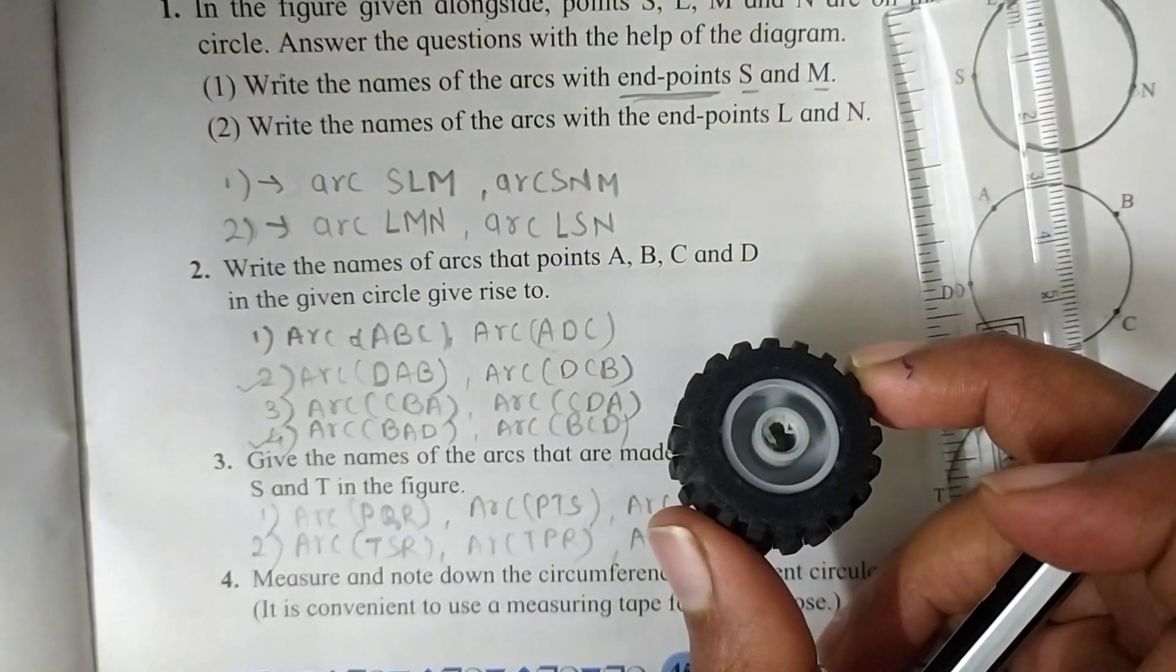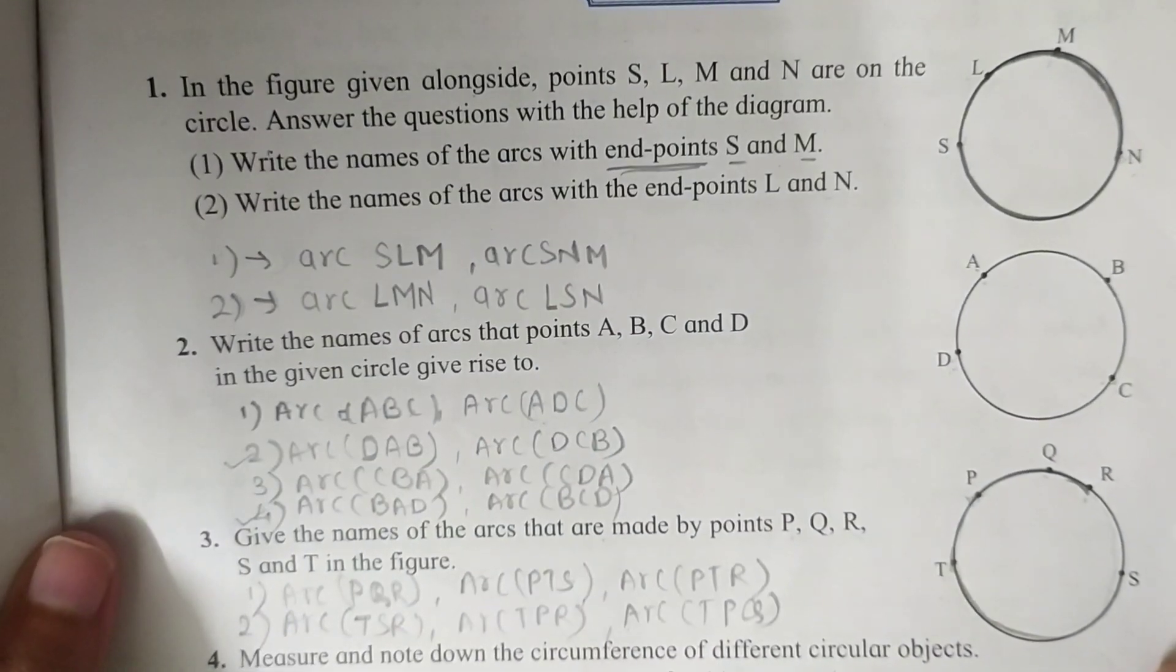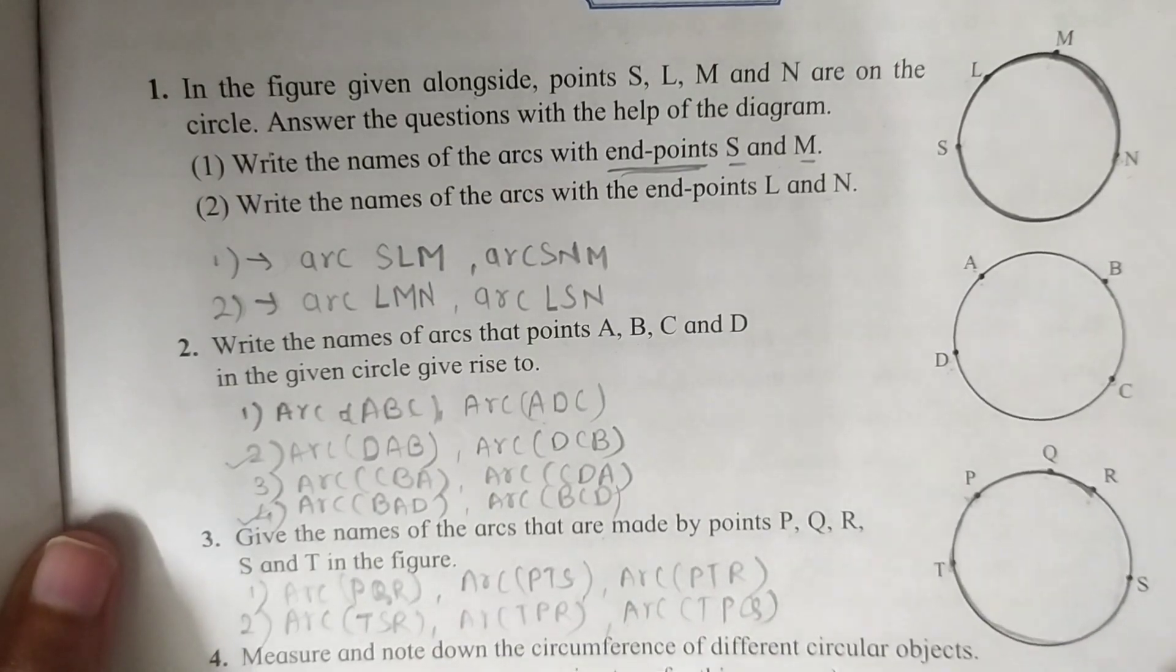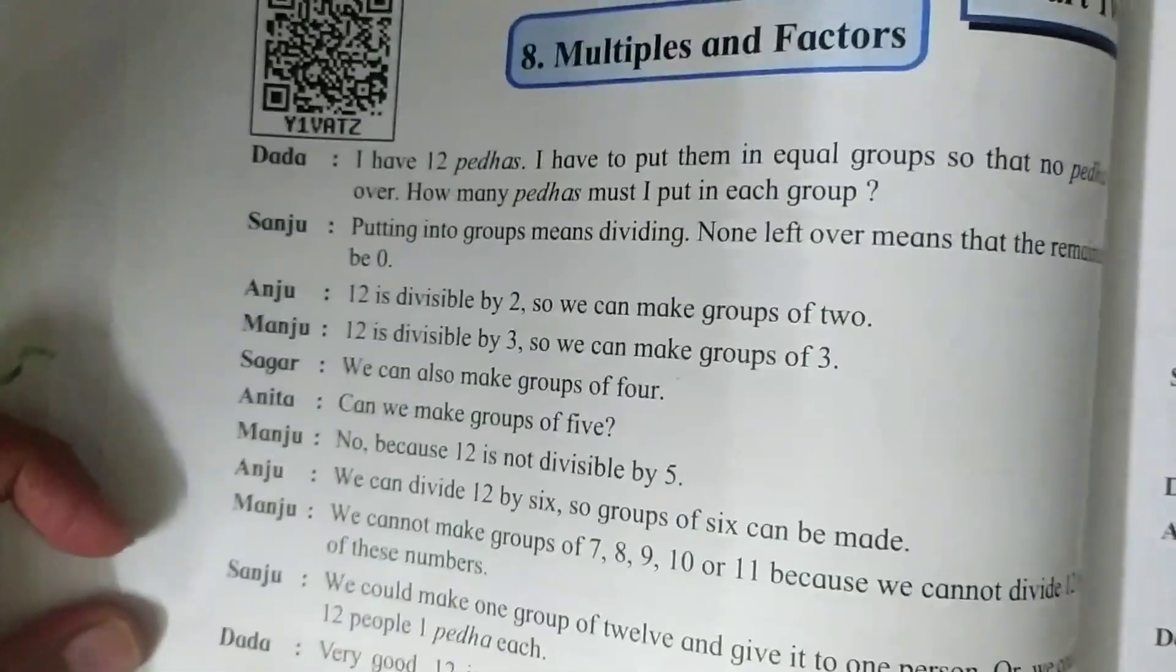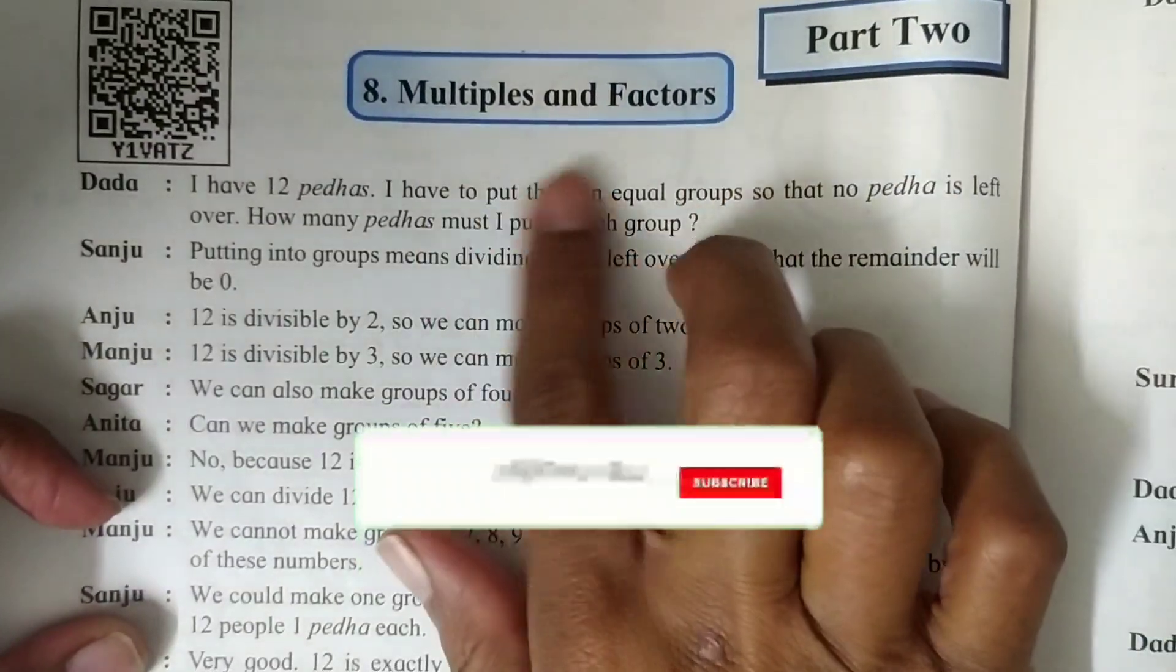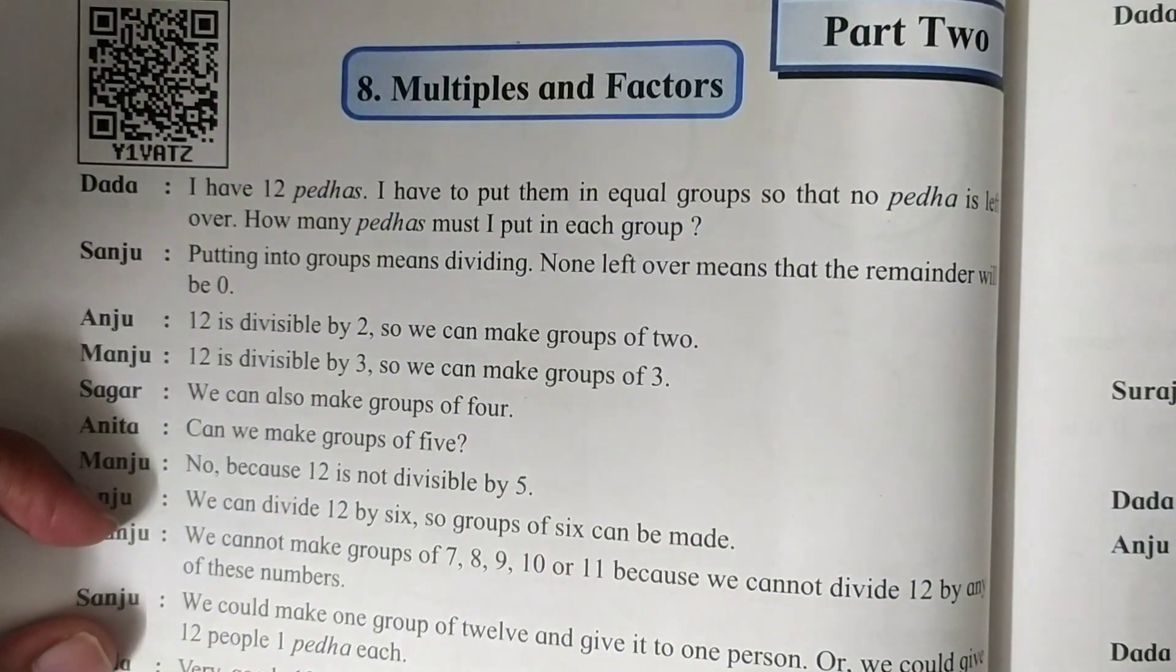Here our first term is complete. Now from next problem set, our second term is start. Part 2 multiples and factors. Let's see you in next video. Thanks for watching this video.